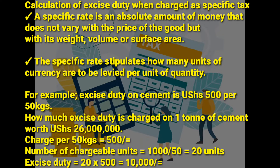A specific amount of money — for example, 500 per litre or 200 per kilogram — that is a specific rate. The specific rate stipulates how many units of currency are levied per unit of quantity. Units of currency may be 500 shillings per litre. Let's have an example.